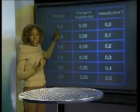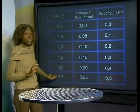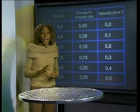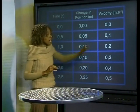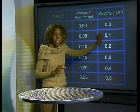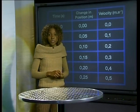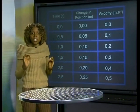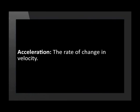At 0 seconds, the velocity of the trolley was 0, but it increased to 0.5 meters per second during the fifth time interval. Notice also that this increase in velocity follows a pattern. The velocity increases from 0 to 0.1 in the first time interval, and then from 0.1 to 0.2 in the second time interval. In each of the time intervals, the change in velocity is 0.1 meters per second.